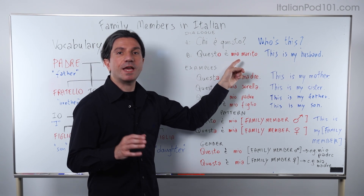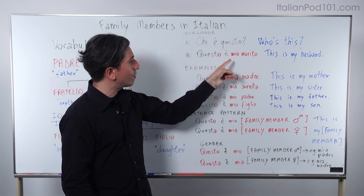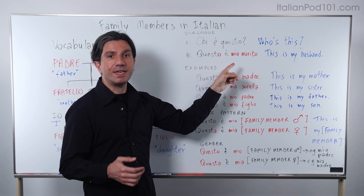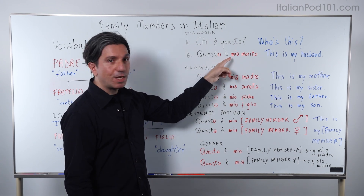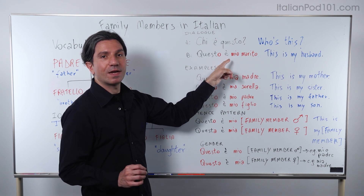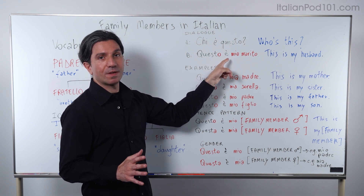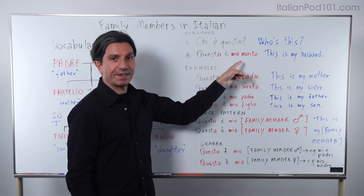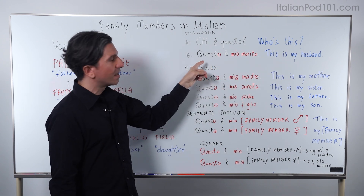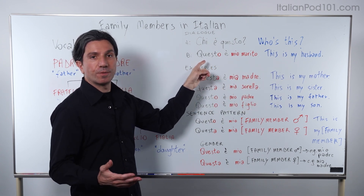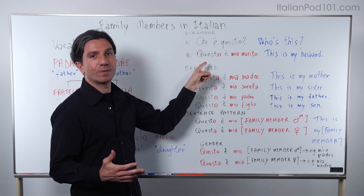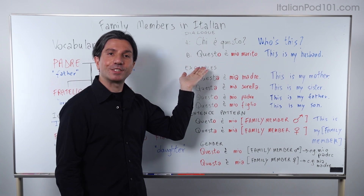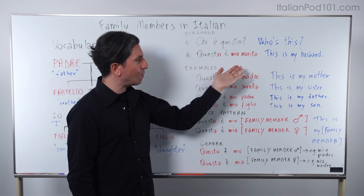Marito is masculine and singular. That's why the other words in the sentence will be masculine and singular. Mio means 'my' and is masculine and singular, to agree with marito. Questo means 'this' and is also masculine and singular, to agree with marito.